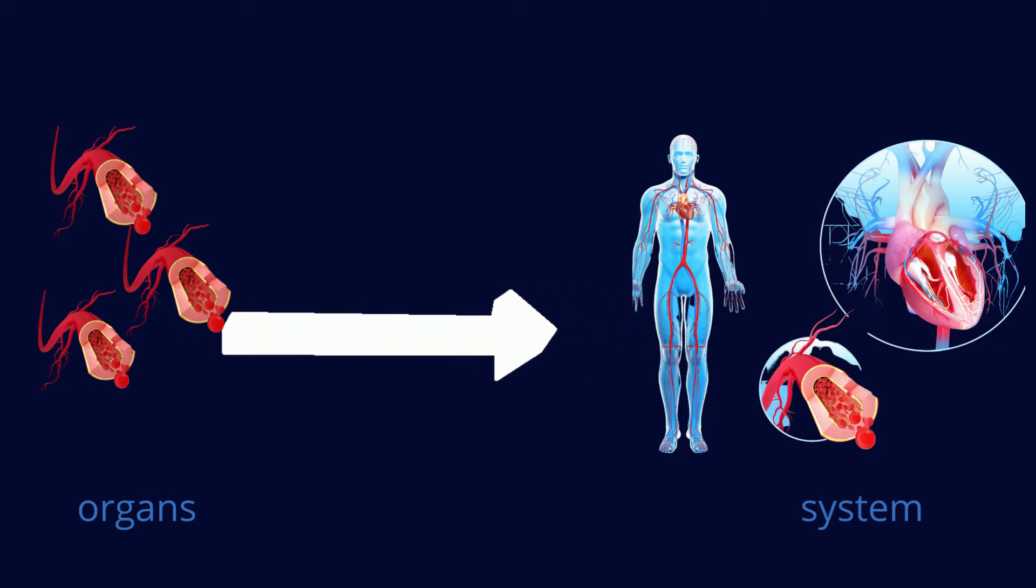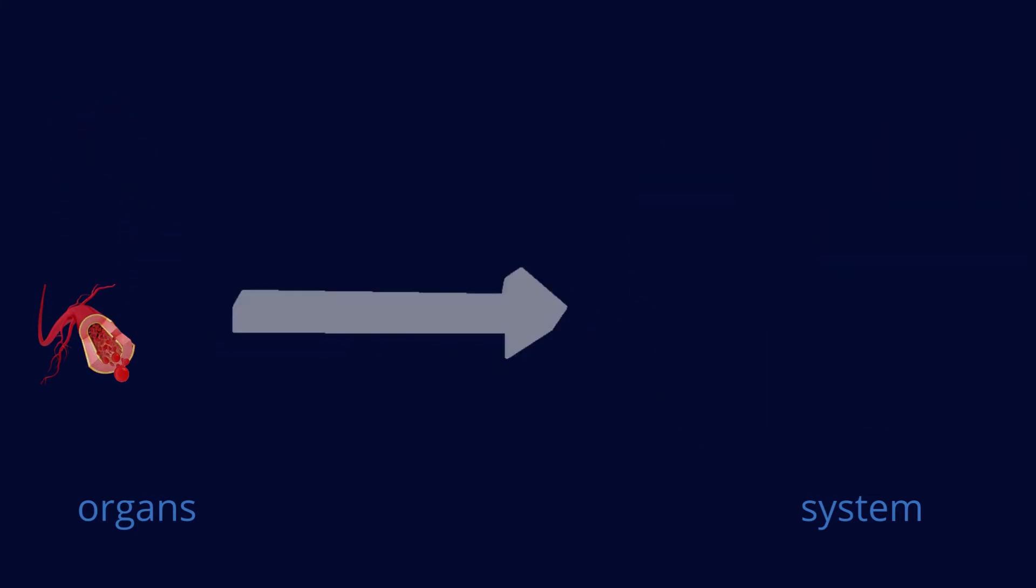oxygen, and hormones to cells throughout the body, and removal of metabolic wastes. You should know that we have 11 systems in our body. In future videos, I will try to cover each one of them.